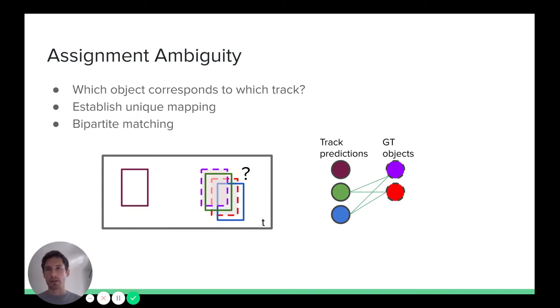Still, we need to establish a unique and globally optimal matching between these two sets. During the evaluation, this is posed as bipartite graph matching problem, and it's based on box overlap between these two sets. The good news is that globally optimal solution that runs in polynomial time exists. This is the Hungarian algorithm. And once this matching is established, we can actually simply count true positives, false positives, and false negatives. And by looking at two frames, we can also count number of ID switches.